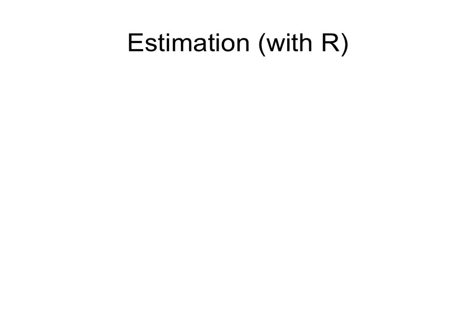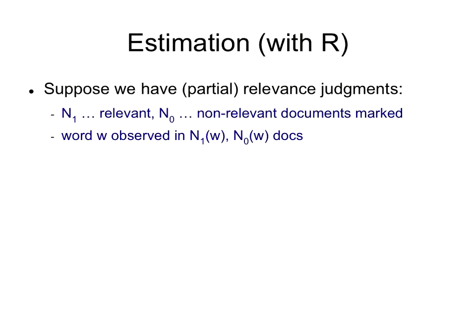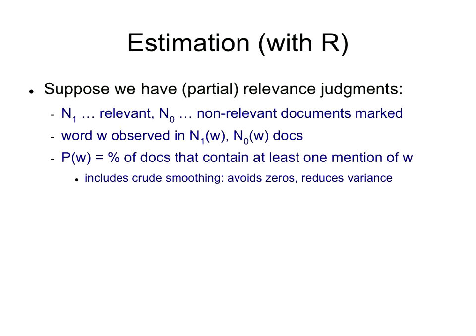Now suppose you have relevance information. At this point you can actually estimate everything. If somebody gave you n1 relevant documents and n0 non-relevant documents, and you could look into the words in those documents, then you could actually estimate the pw and qw which you need to compute those probabilities.